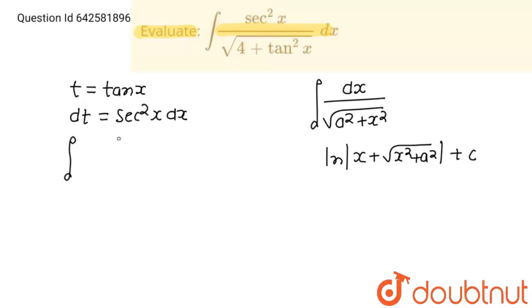So, integration will become sec square x dx is equal to dt upon square root 4 plus t square.